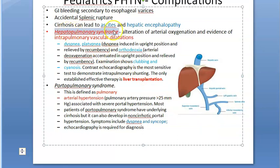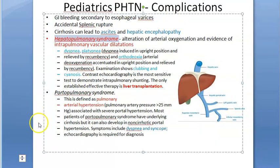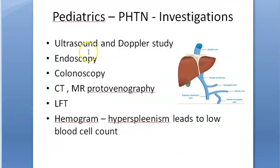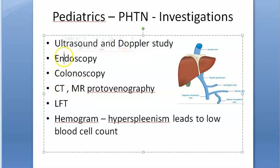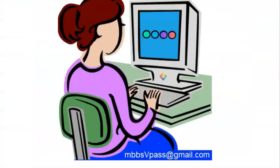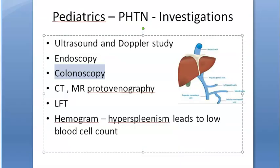For hepatopulmonary and porto-pulmonary syndromes, liver transplant is required; otherwise EHPVO can be managed. Investigations include ultrasound to look for splenomegaly, collaterals, liver abnormalities, and Doppler to check vascular anatomy and portal vein size. Endoscopy and colonoscopy check for esophageal varices and rectal varices. CT or MR porto-venography can be done to check vascular anatomy.